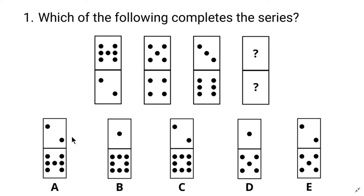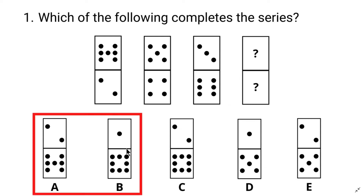Now let's find an answer which has a total of nine dots. Answer A has a total of nine dots. Here's a tip: do not assume you have found the correct answer until you check all the other answers. Looking at answer B, the top square has one dot and the bottom square has eight dots — the total is also nine. So both A and B fit the pattern, and we need to find another pattern.